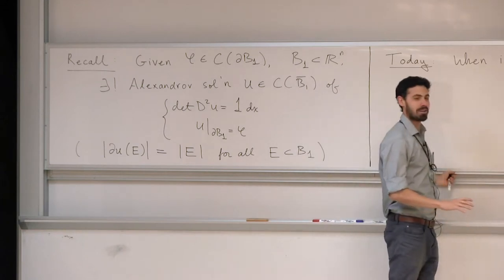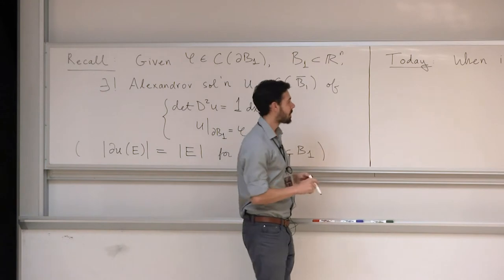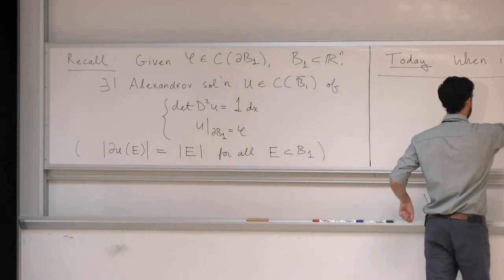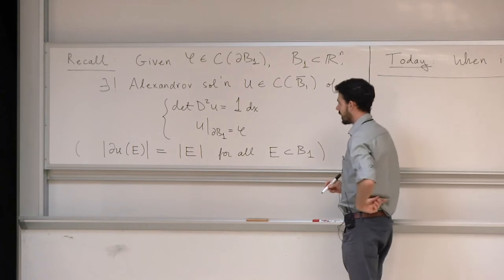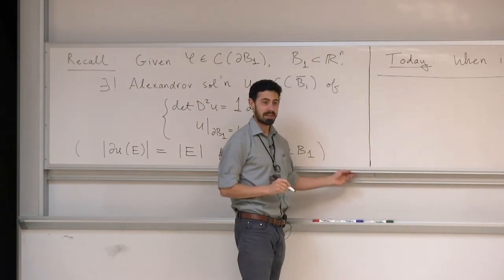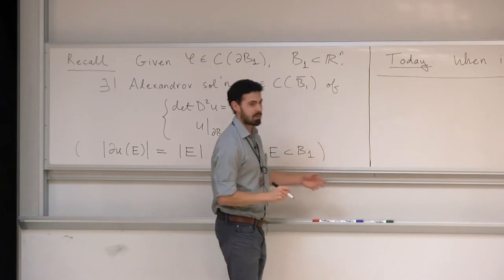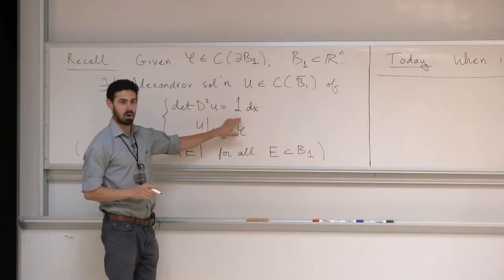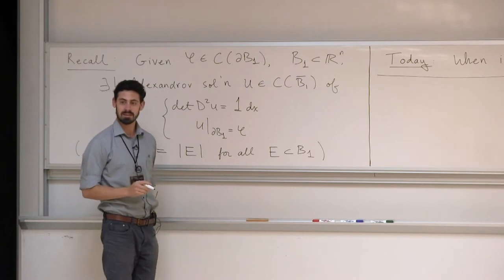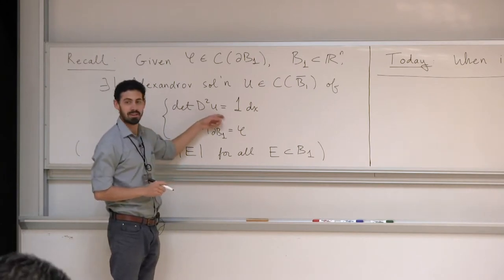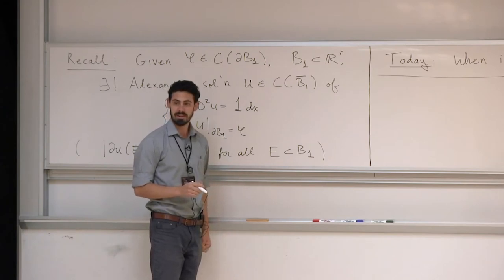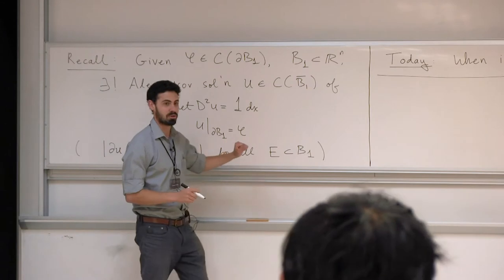We want to explore the same question for the Monge-Ampère equation. When the right-hand side is extremely nice, can we say the solution is necessarily smooth inside? The answer turns out to be somewhat delicate. Our approach to the problem of interior regularity is going to be completely different from yesterday—we'll take a classical PDE approach. In classical PDEs, one typically assumes you have a smooth solution and asks when you can control derivatives of the solution in various function spaces.